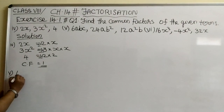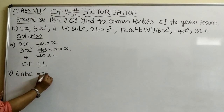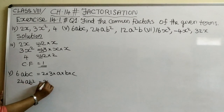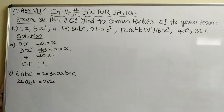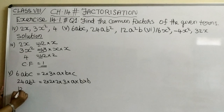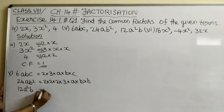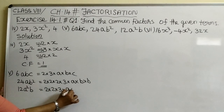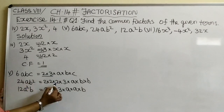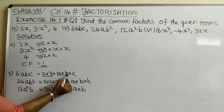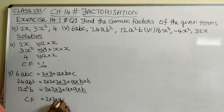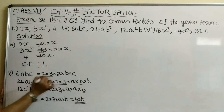Next question: 6abc, 24ab², and 12a²b. The factors of 6abc are 2 into 3 into a into b into c. The factors of 24ab² are 2 into 2 into 2 into 3 into a into b into b. The factors of 12a²b are 2 into 2 into 3 into a into a into b. The common factors are 2 into 3 into a into b, which equals 6ab. So 6ab is the common factor.